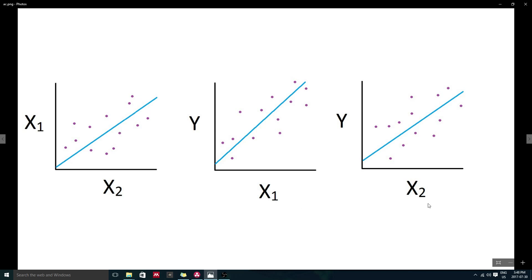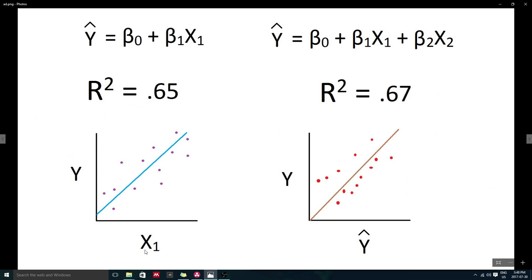Interestingly, x1 and x2 on their own also appear highly related to y, as demonstrated by these two plots. Now, here I have two models, one where y is being predicted by x1, and one where y is being predicted by both x1 and x2.